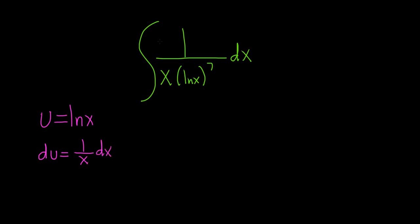And you see that it works out really nicely. Here we have 1 over x, dx. So all of this is going to be our du. So we write it as du over, and then ln x is u, so just u to the 7th.